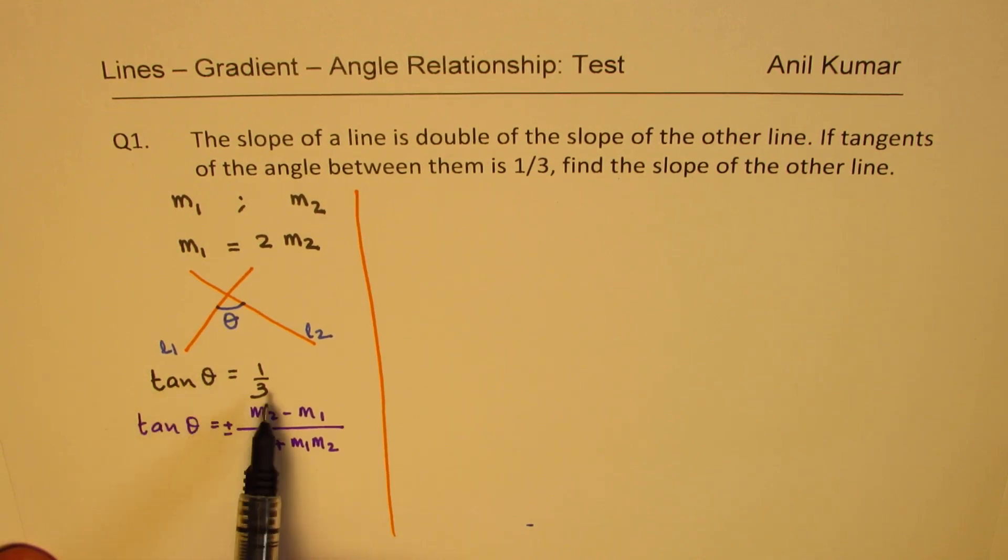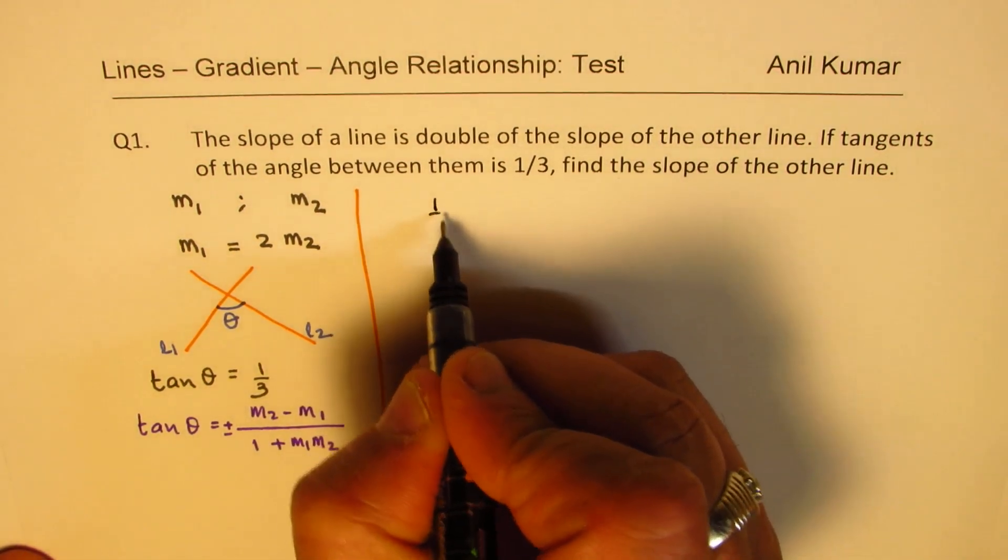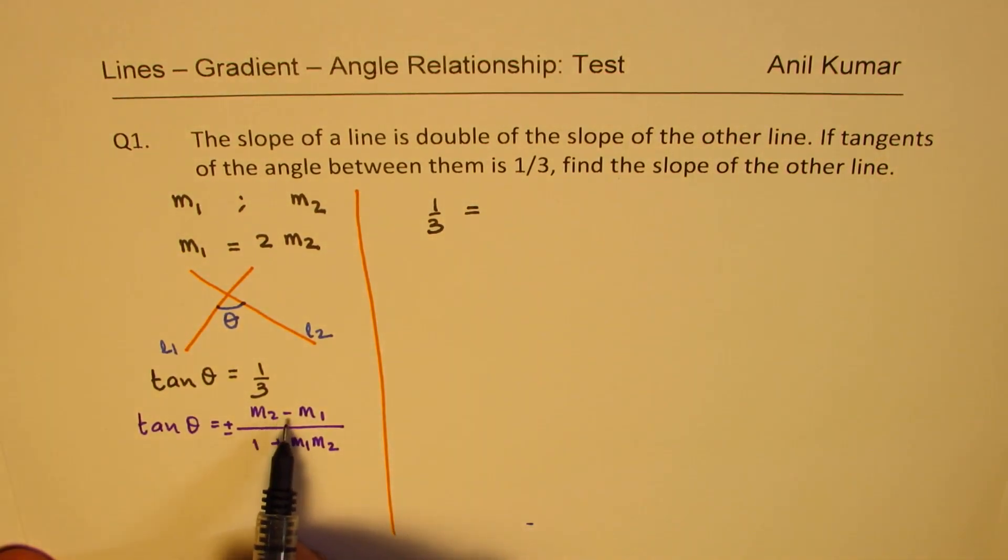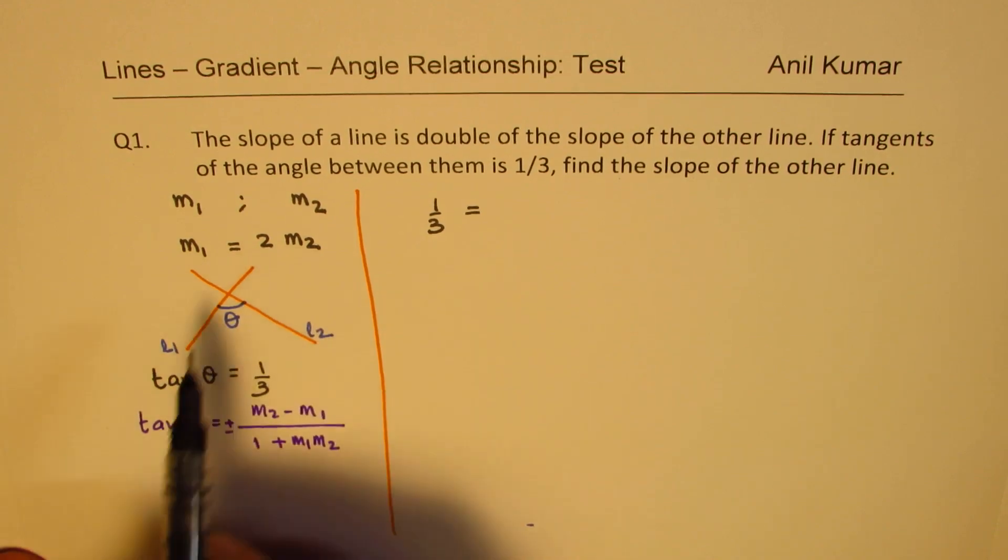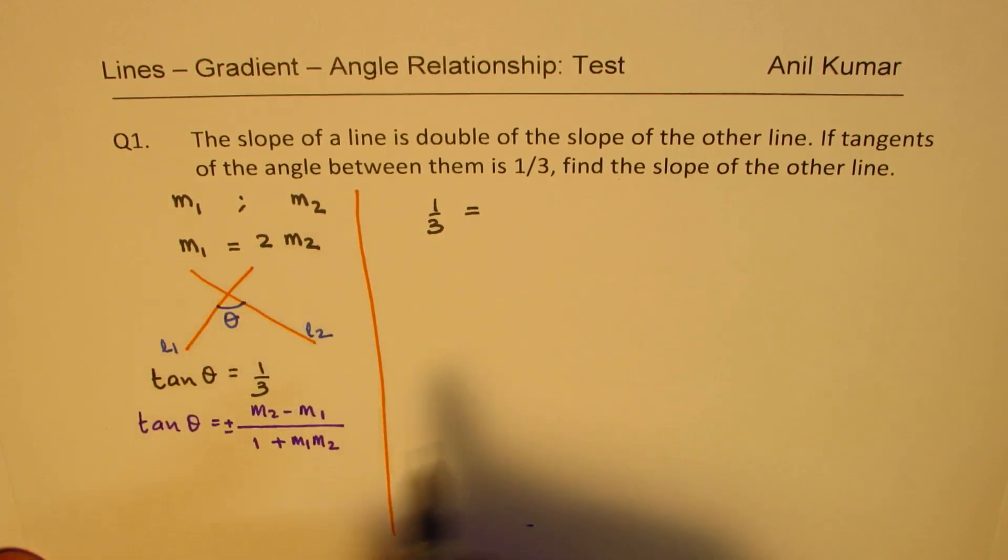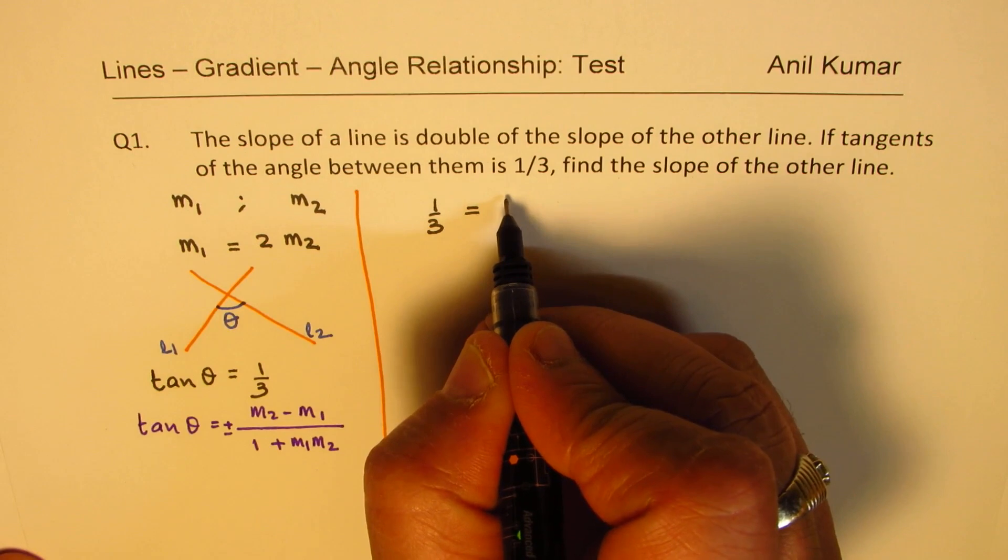we are given tan theta as 1 over 3. So, I'll write 1 over 3 equals to m2 minus m1. Now, m1 is 2 times m2, so I'll write m1 as 2 times m2, right? So, we have here,